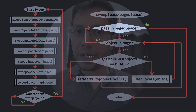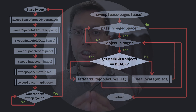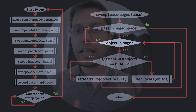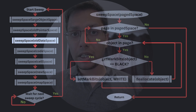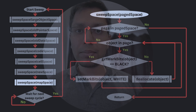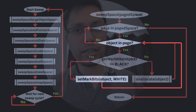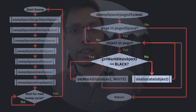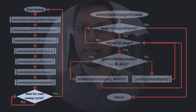This process is repeated until we iterate through all the objects and free the unreachable ones. This function is called for all the spaces in the heap in a particular order: it starts with large object space, then old pointer space, then old data space, code space, cell space, new space, and finally map space. The map space is swept last because deallocating dead maps overrides them, and the unreachable objects in other spaces may rely on these dead maps for their exact sizes.